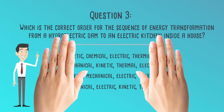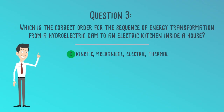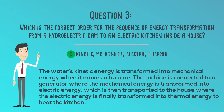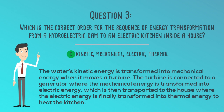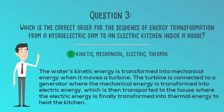The correct answer is C. Kinetic, mechanical, electric, thermal. The water's kinetic energy is transformed into mechanical energy when it moves a turbine. The turbine is connected to a generator where the mechanical energy is transformed into electric energy, which is then transported to the house where the electric energy is finally transformed into thermal energy to heat the kitchen.